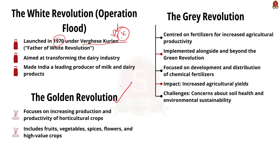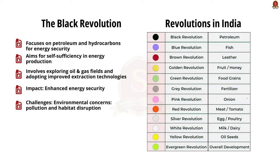The Gold Revolution aimed at increasing the production and productivity of horticulture crops in India, focusing on cultivation of fruits, vegetables, spices, flowers, and other high-value crops. The Grey Revolution is centered on fertilizers — aimed at enhancing agricultural productivity by increasing the use and efficiency of chemical fertilizers. It was implemented throughout the Green Revolution and beyond, focusing on development and distribution of chemical fertilizers to farmers. However, there are growing concerns about soil health and environmental sustainability.